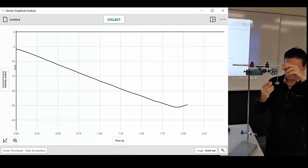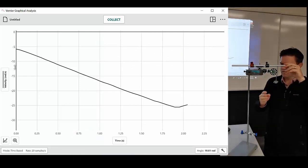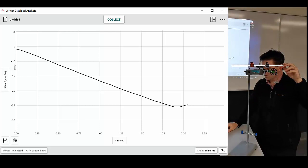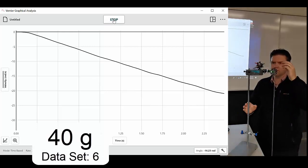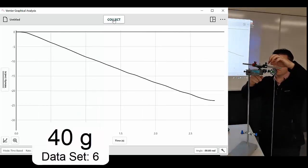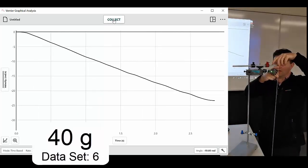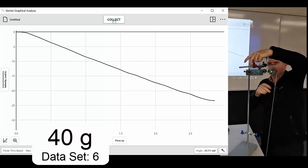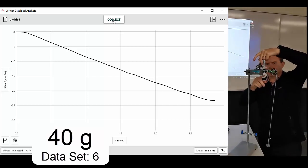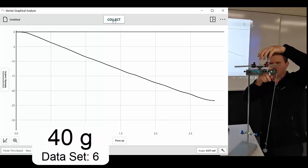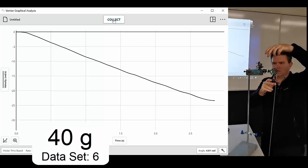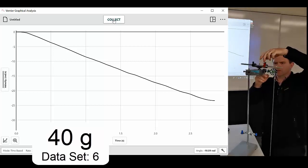Okay I take another 10 grams off. So I'm left with 40 grams. And like we'd expect, as the mass decreases, the torque decreases, hence the angular acceleration decreases.